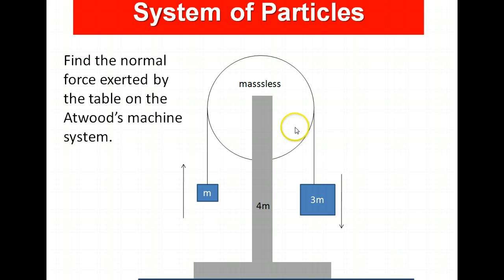It'd be useful in a situation like this. Suppose we have a massless pulley with attached masses hanging from the pulley, and this pulley consists of a base of mass 4m. We know that this 3m mass will accelerate downward, m will accelerate upward with the same acceleration, and it's a very simple problem to figure out what the acceleration, the upward acceleration of m and the downward acceleration of 3m, is. But suppose the question that we want to address is: find the normal force exerted by the table on the Atwood's machine system.